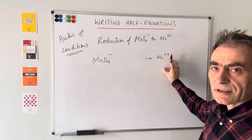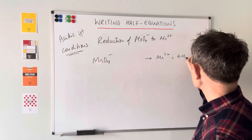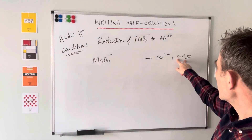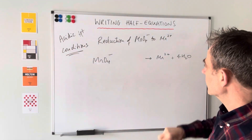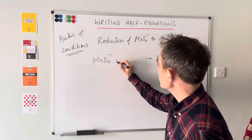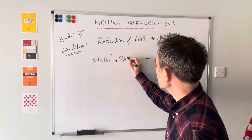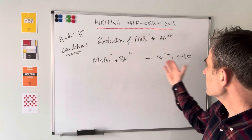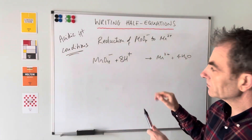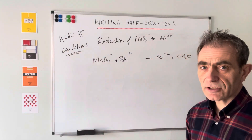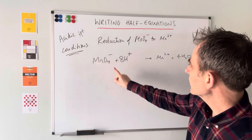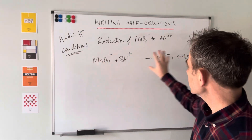We've got four oxygens on the left and none on the right, so I want to put four H2O's on the right. Now that's introduced eight hydrogens, so I'm going to need eight H plus ions to balance the hydrogen atoms. So that's all balanced for atoms. The last thing - and there are only two steps in this type of half equation - is to work out the overall charge left and right.